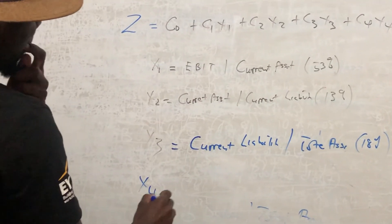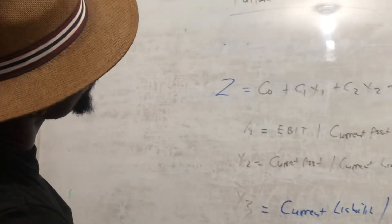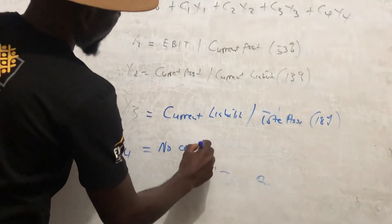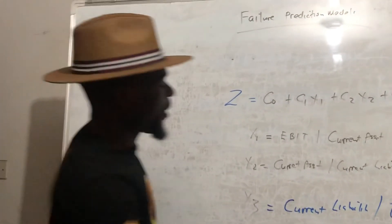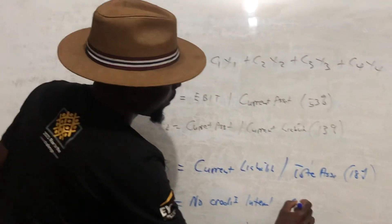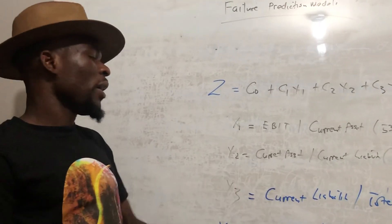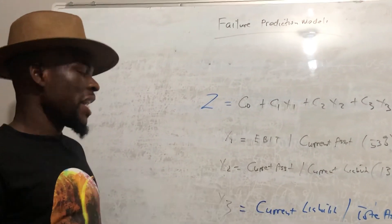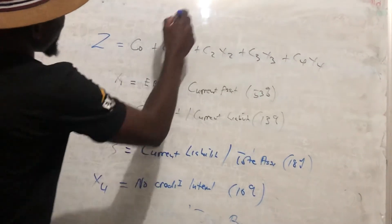X3 is equal to current liabilities over total assets, and this contributes 18 percent. The last variable, X4, is equal to what we call the no credit interval, weighted at 16 percent. The no credit interval is the period that a company can continue settling its debts assuming it ceases to have any sales.